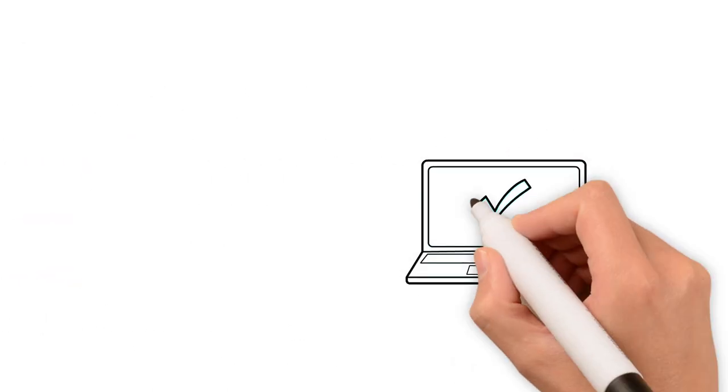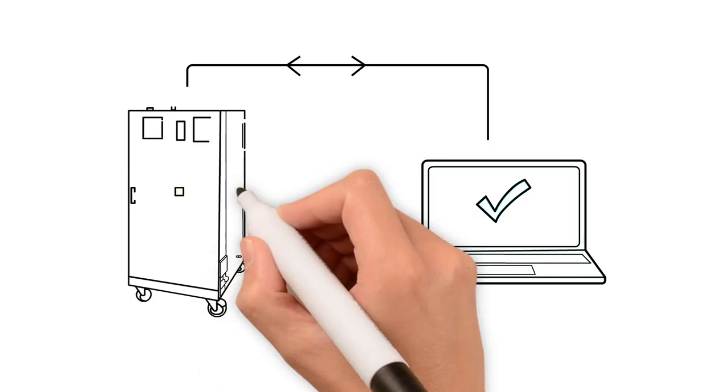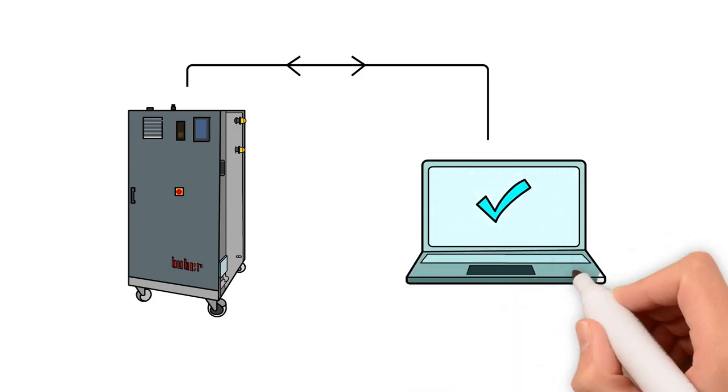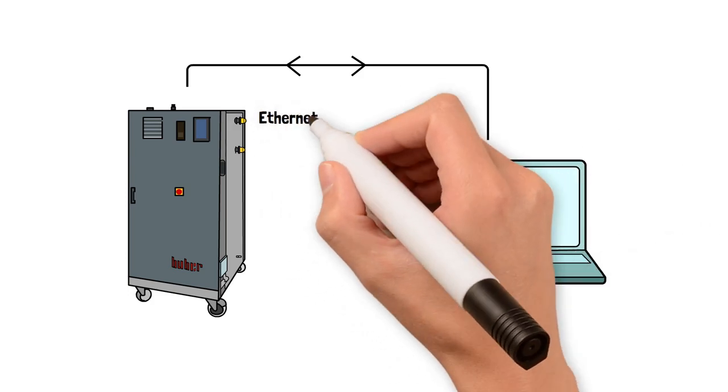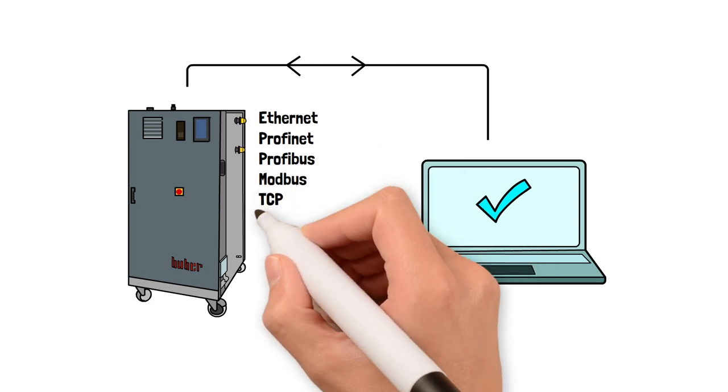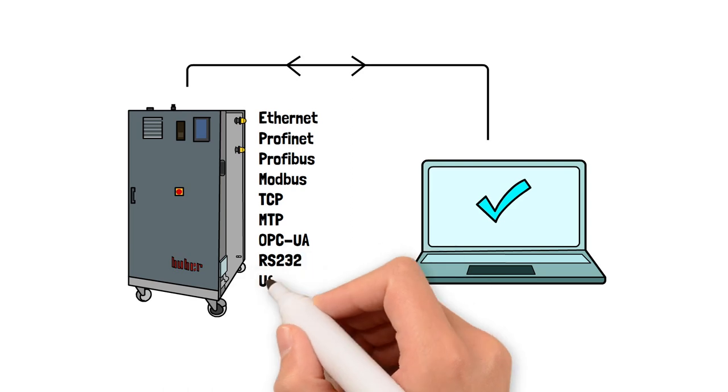Would you like to operate Unimotive in an automated production environment? This is no problem either. All common interface standards are already integrated or optionally available including Ethernet, PROFINET and PROFIBUS as well as MODBUS TCP, MTP, OPC UA, RS-232 and USB.